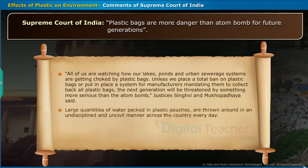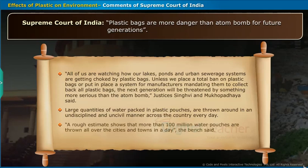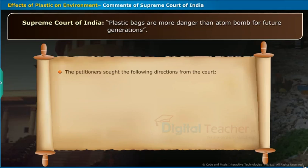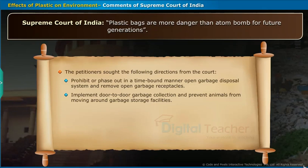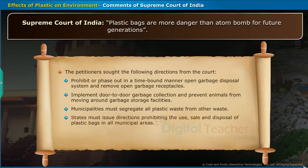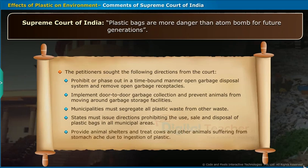Large quantities of water packed in plastic pouches are thrown around in an undisciplined manner every day — more than 100 million water pouches are thrown across cities and towns in a day. The petitioner sought directions from the court to: prohibit open garbage disposal systems, implement door-to-door garbage collection, prevent animals from moving around garbage facilities, segregate all plastic waste from other waste, prohibit the use, sale and disposal of plastic bags in all municipal areas, and provide animal shelters to treat cows suffering from ingestion of plastic.